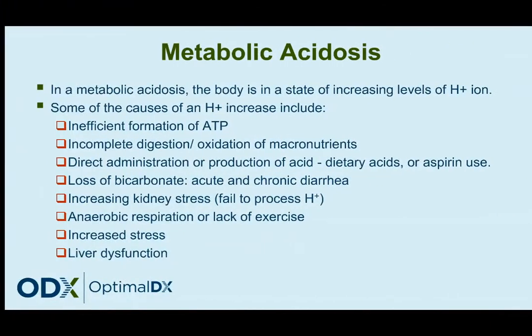Let's take a look now at metabolic acidosis. In a metabolic acidosis, the body is in a state of increasing levels of H+ ion. Some of the causes include inefficient formation of ATP, which can increase the output of H+ into the body; incomplete digestion or oxidation of macronutrients; direct administration or production of acids — such as intake of dietary acids or aspirin use (remember, aspirin is salicylic acid). Anytime you're putting acids into the body, it increases the level of H+.